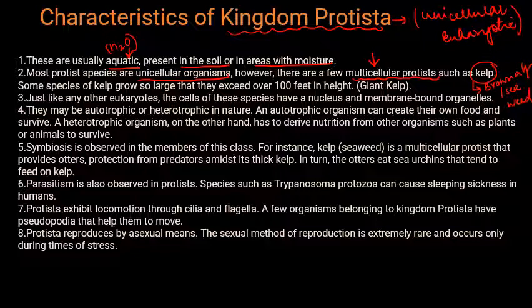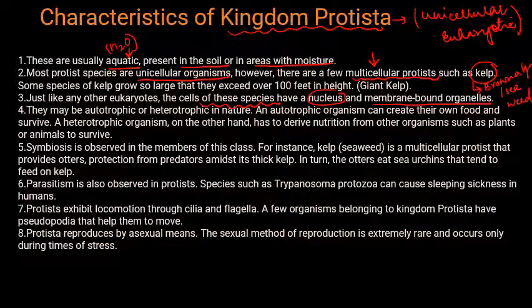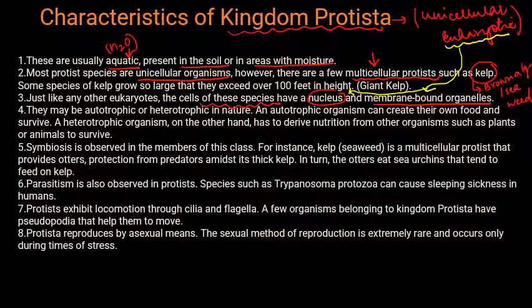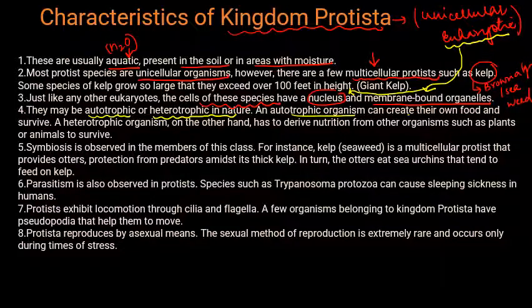Kelp is a seaweed found in shallow oceans. Just like other eukaryotes, the cells of these species have a nucleus and membrane-bound organelles. The mode of nutrition may be autotrophic — making their own food — or heterotrophic, depending on other organisms for food.